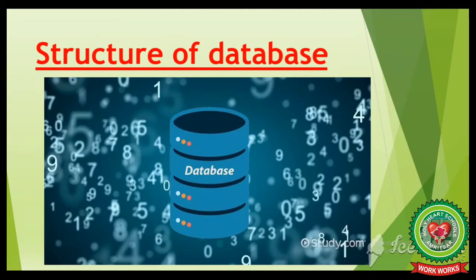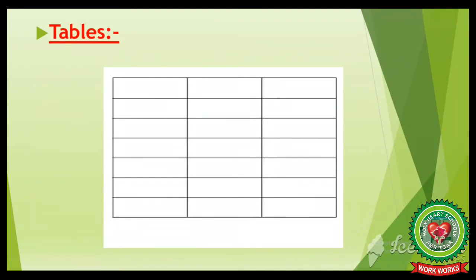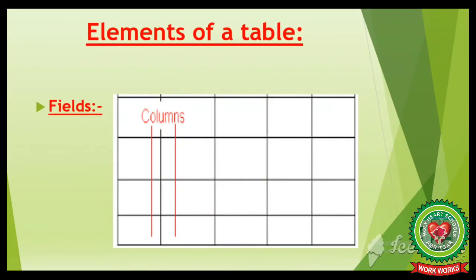Next is the structure of a database. A database contains a specific structure to store data. Let us study some basic terminologies. Number one is tables — tables are the building blocks of a database. They store complete data in a structured manner, that is, in the form of rows and columns, and every table has a finite number of rows and columns. The first element of a table is fields — all the columns in a table are called fields.